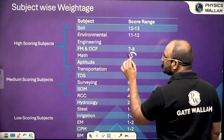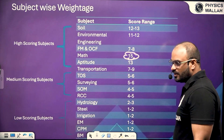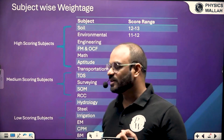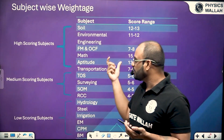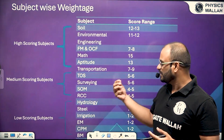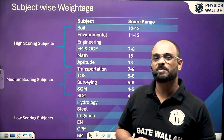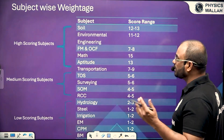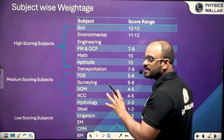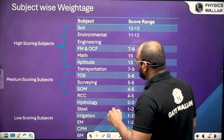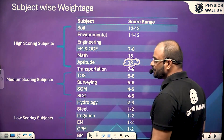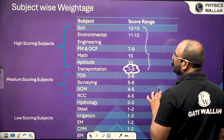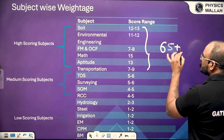Then we have mathematics with a weightage of 15 marks — differentiation, integration, etc. Engineering mathematics is also important in further subjects like strength of material, torsion, RCC, and various other subjects. Then we have aptitude with 13 marks and transportation with 7 to 9 marks. If you add the weightage of these subjects, it is approximately 65-plus marks — almost 65 percent of the GATE exam syllabus for civil engineering.